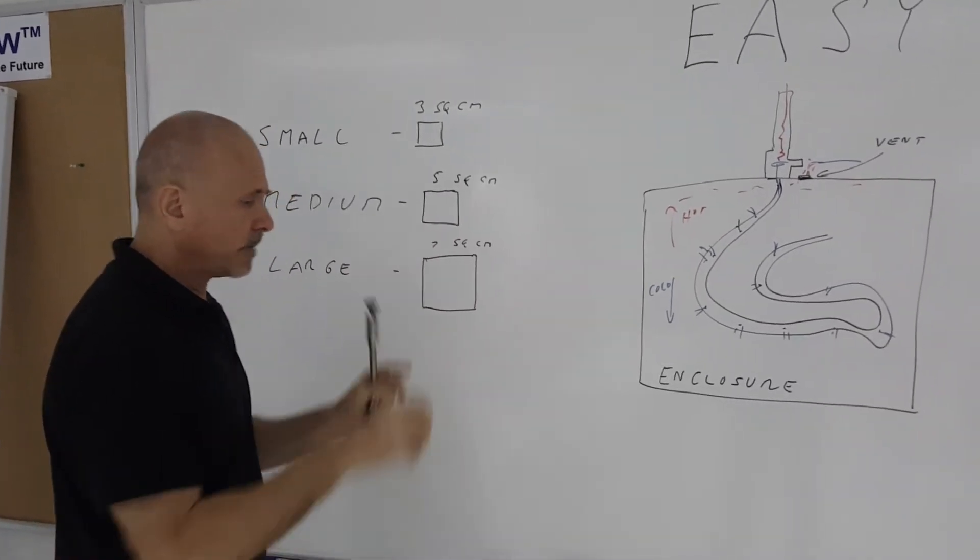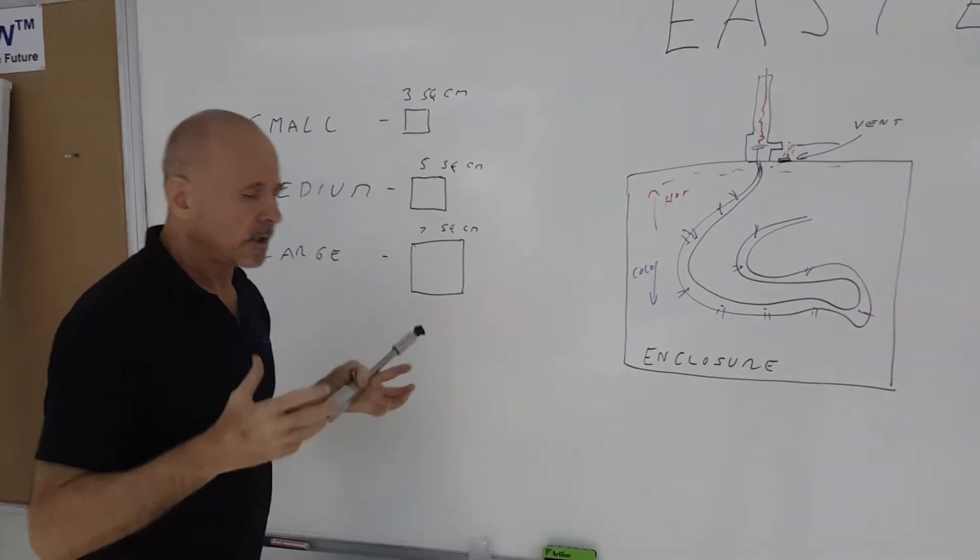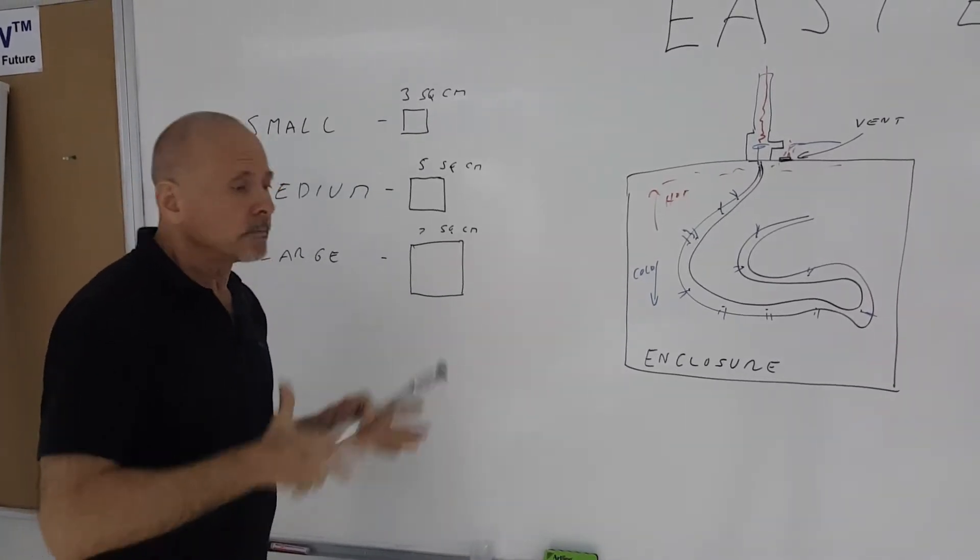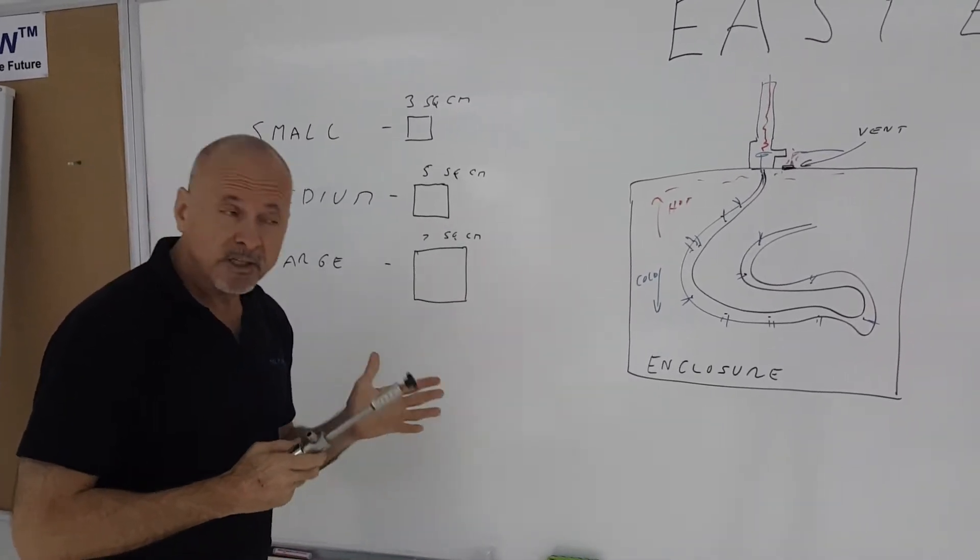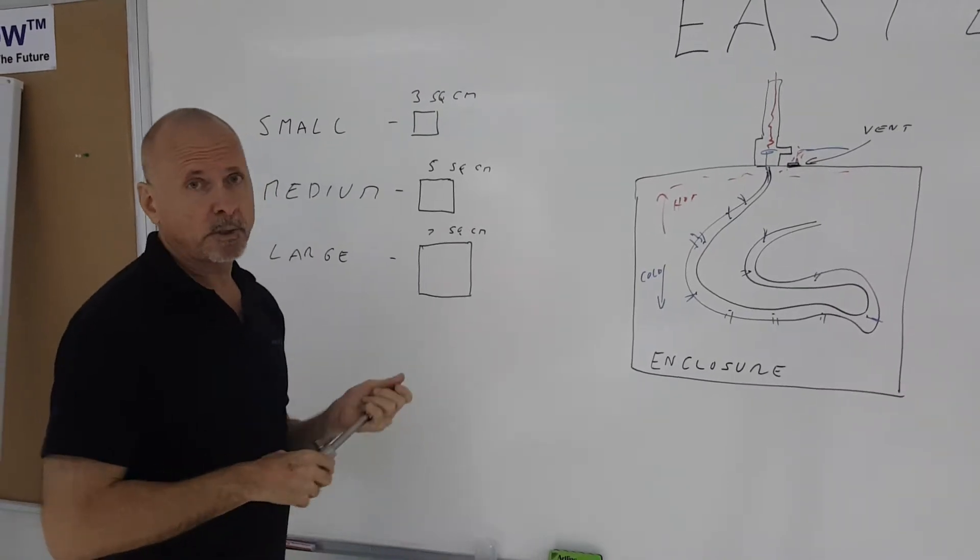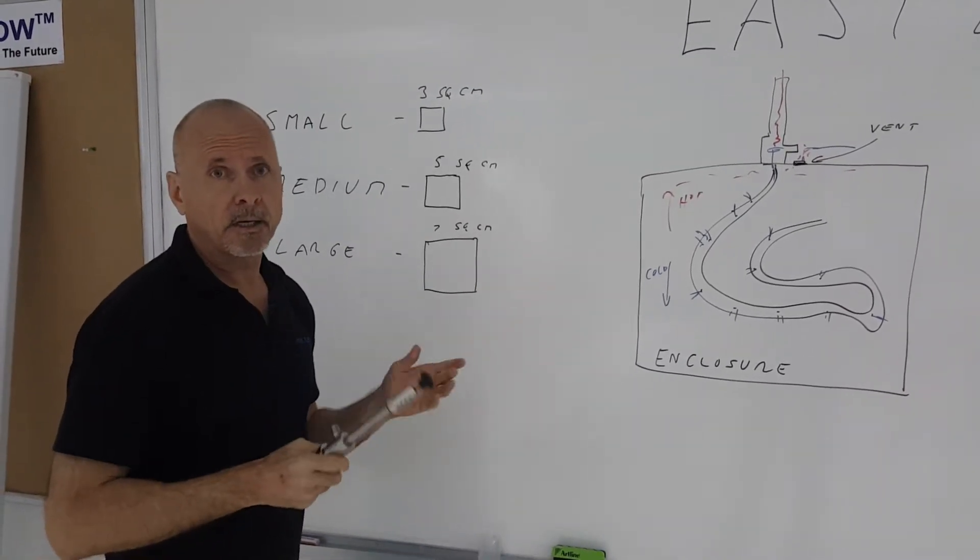So if you have a very big area, you may have to have multiple vortex tubes to cool it properly or use an alternative method of cooling, which will be discussed later on in another Easy Engineering video.